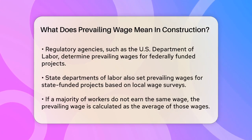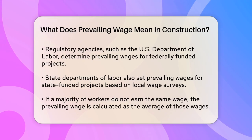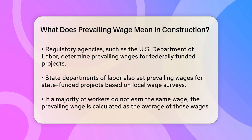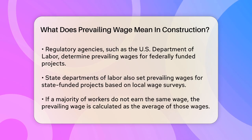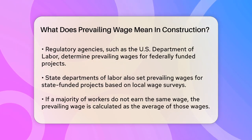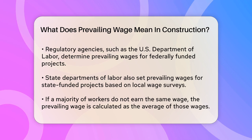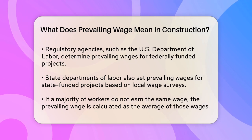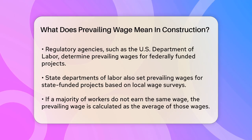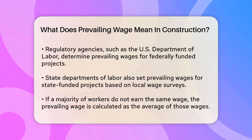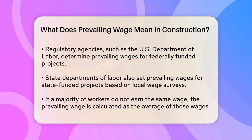Prevailing wages are determined by regulatory agencies, such as the U.S. Department of Labor at the federal level, and by state departments of labor for state-funded projects. The rates are calculated based on surveys of wages paid on similar projects within the area. If the same wage is not paid to a majority of workers, the prevailing wage is the average of the wages paid, weighted by the total number of workers in that classification.